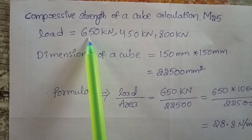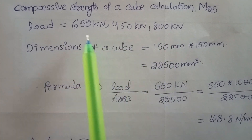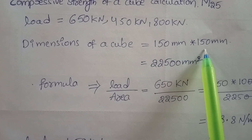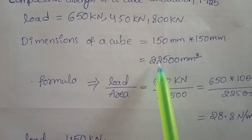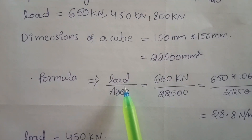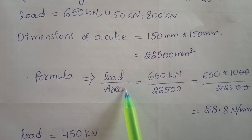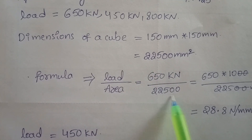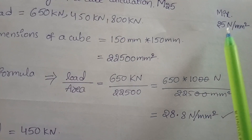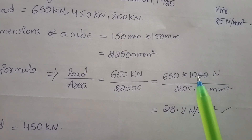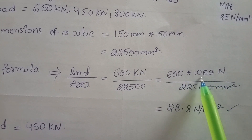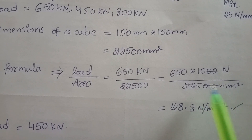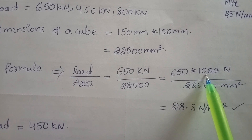Cubes after testing — three cube loads: 650 kN, 450 kN, and 800 kN. Dimensions of the cube are 150 mm x 150 mm. The area is 22,500 mm squared. The formula for compressor strength is cube load divided by area. First cube: 650 kN divided by 22,500 mm squared. We need the answer in N per mm squared.